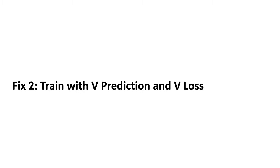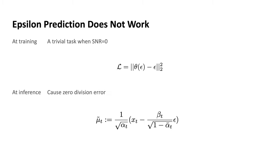Fix number two: train with v prediction and v loss. Many existing models use the epsilon prediction formulation, but it doesn't work with the rescaled schedule. At training, it will become a very trivial task when the SNR approaches zero — the model will be given pure noise and asked to predict the pure noise, so it will simply output the input without learning anything meaningful. Also at inference, it will cause a zero division error with this formulation, preventing us from accomplishing the inference task.